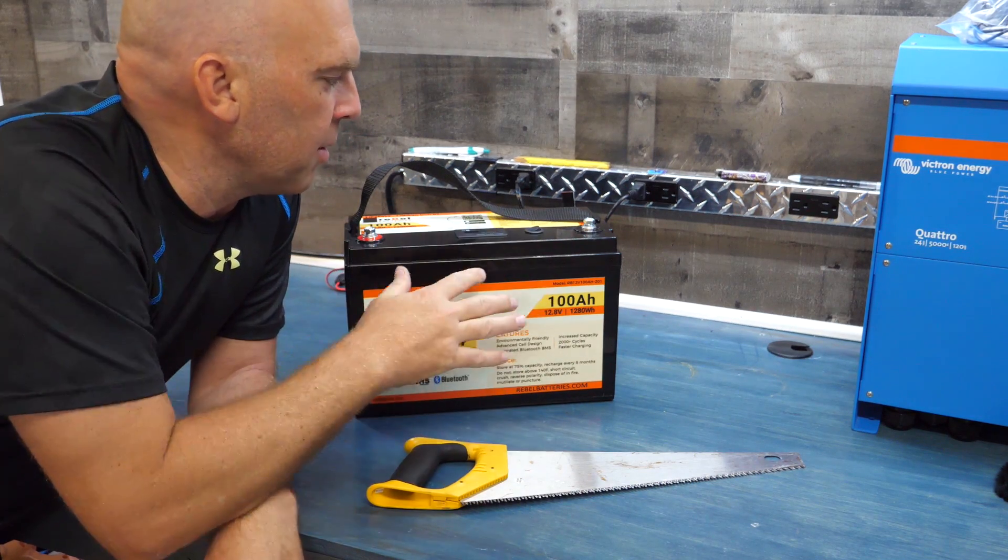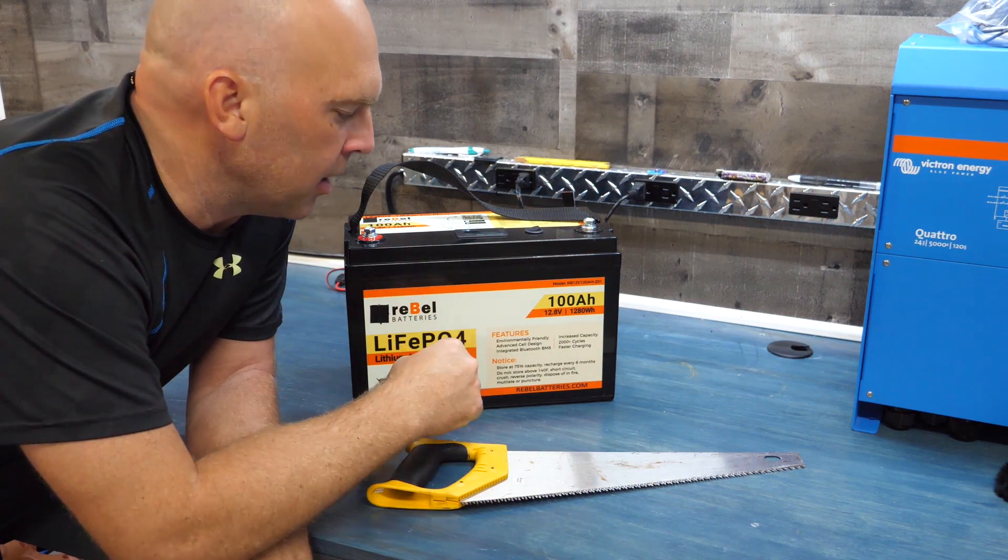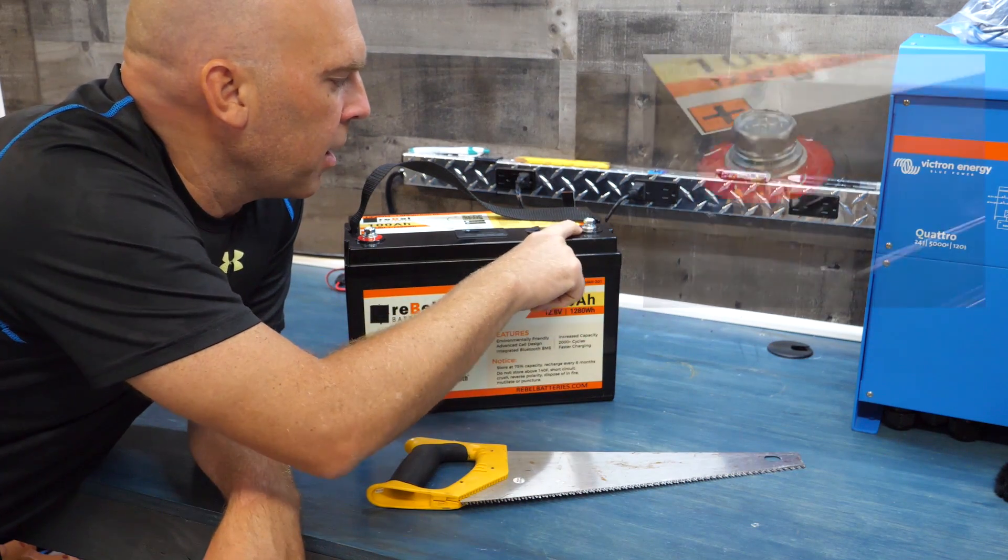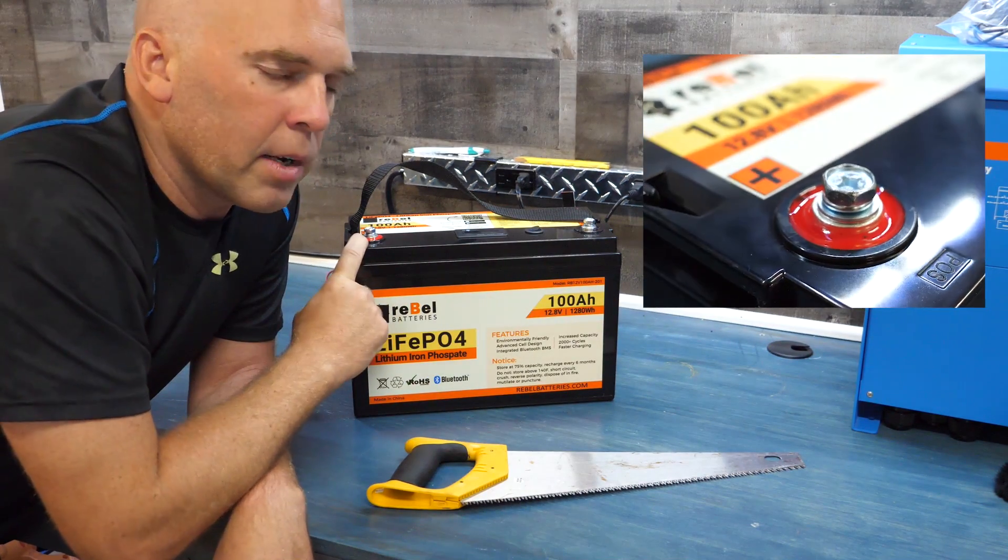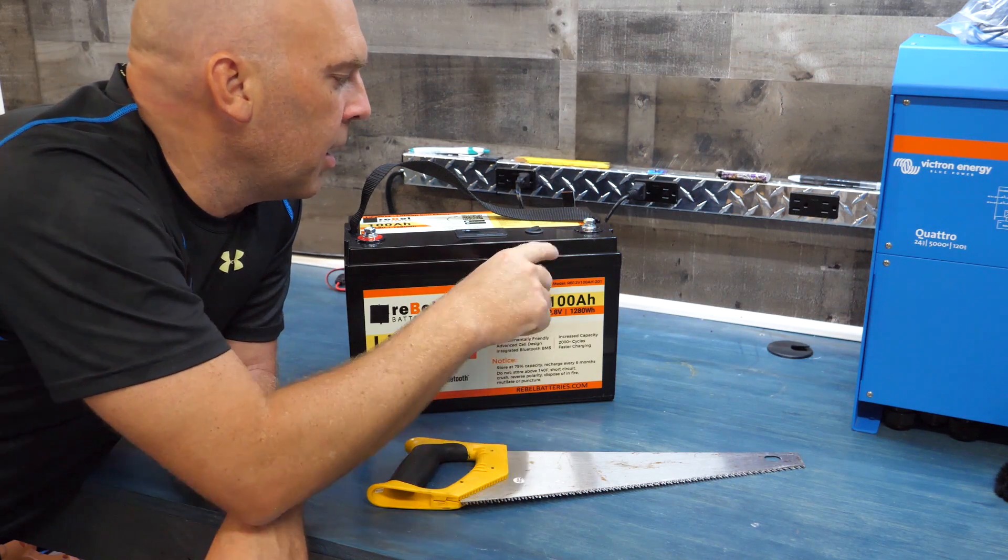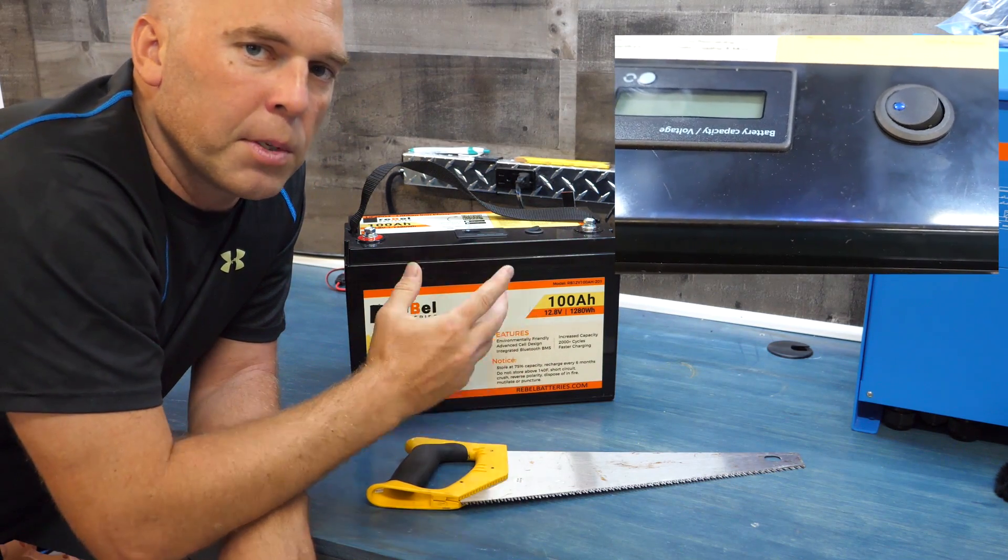First I'm going to talk about some of the physical characteristics of the battery. On the top here you see two potted M8 terminals in epoxy, black on this side and red on this side. They also have lock washers and flat washers. We also have a bluetooth switch to turn the bluetooth on and off.